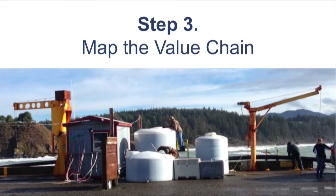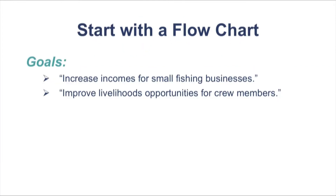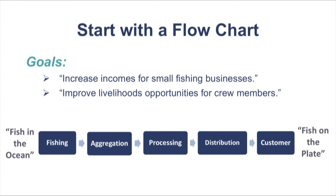Now for step three: mapping the value chain. In this step, you are mapping the existing market conditions of your selected value chain. We will use seafood as an example to illustrate this process and will draw from real experiences of groups working on the north coast and south coast of Oregon. For this example, we will focus on the dual goals of increasing incomes for small fishing businesses and improving livelihood opportunities for crew members. Keep these goals in mind as we do our mapping. First, you will want to start with a simple flow chart that captures the main categories of players in the core chain. This will keep you organized as you do your mapping.